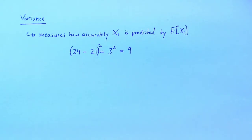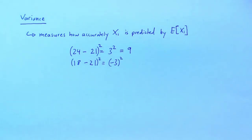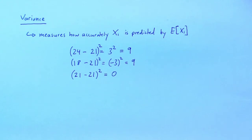If we draw Ben first, then x1 will take the value 18. 18 minus 21 is minus 3, and squared that gives us 9 again. If we draw Carl first, then our prediction is exact, and the squared difference between realization and prediction will be 0. The variance of a random variable is a concept that uses this notion of a squared difference between the realization of a random variable and its expected value.